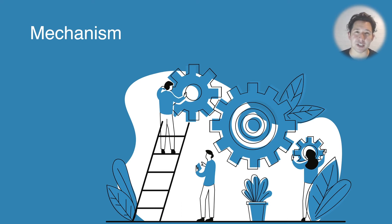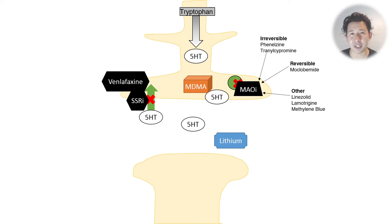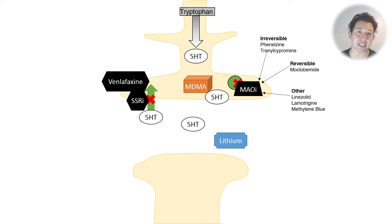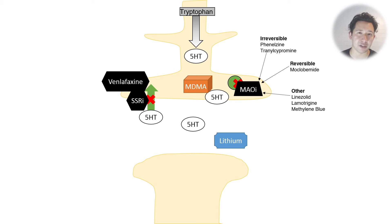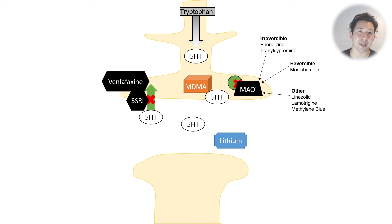There are various ways you can get serotonin toxicity, but basically all of them result in increased presence of serotonin in the synaptic cleft. Here we have a diagram showing the pre-synaptic neuron at the top, with tryptophan being made into 5-HT, which is serotonin. SSRIs and venlafaxine — an SNRI — inhibit the reuptake of serotonin. MDMA and other amphetamines increase the release of serotonin.